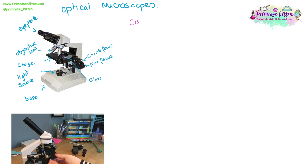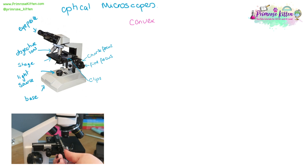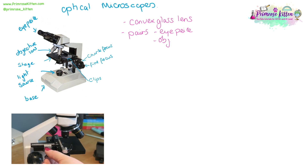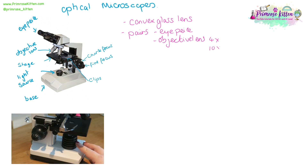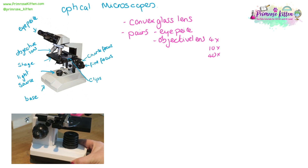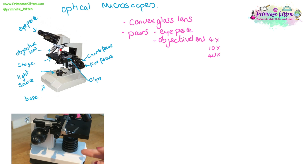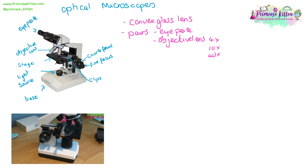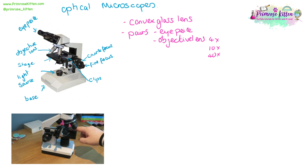Optical microscopes use a convex glass lens. They have a pair of lenses: the eyepiece and the objective lenses. These will generally be four times, ten times, forty times, maybe a hundred times magnification. You will need a light source coming from below so that you can actually visualise things; otherwise it is going to be very, very hard to see anything.